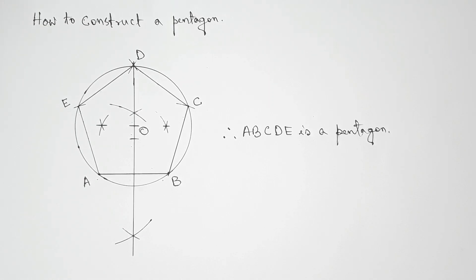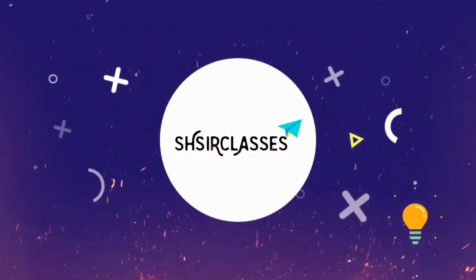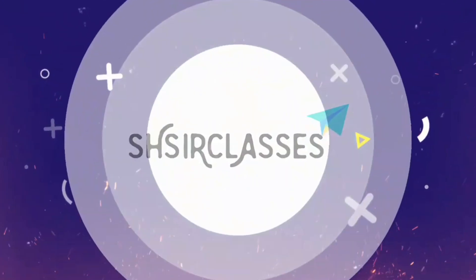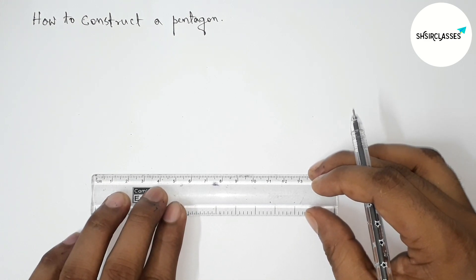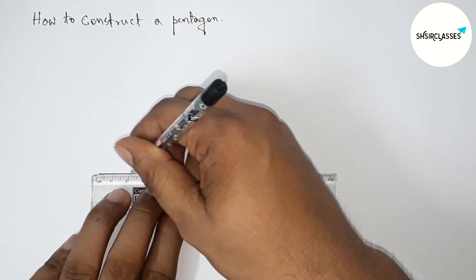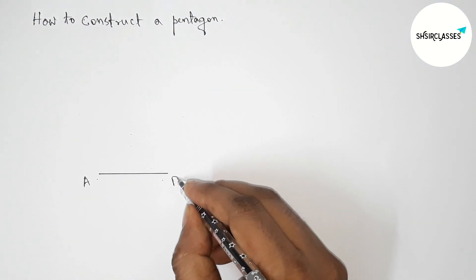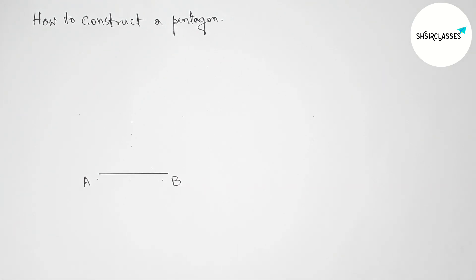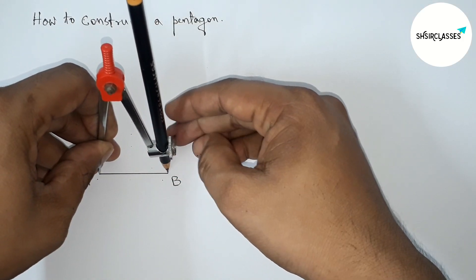Today in this video we will see how to construct a pentagon in an easy way. So let's construct this pentagon. First of all, let us draw a line segment of any length. Drawing the line segment now, taking here point A and here point B.